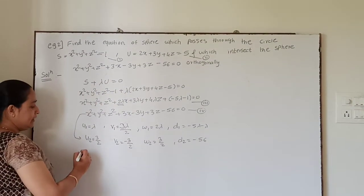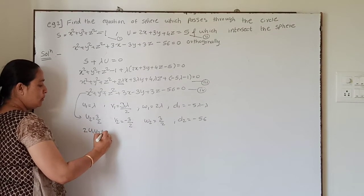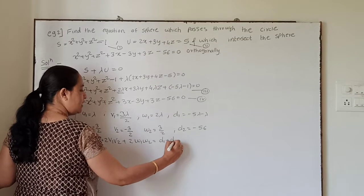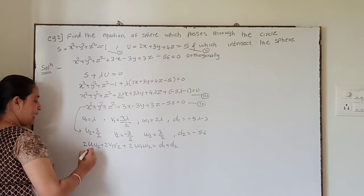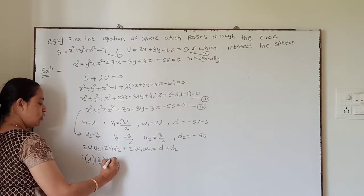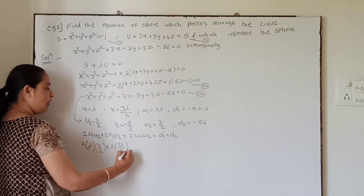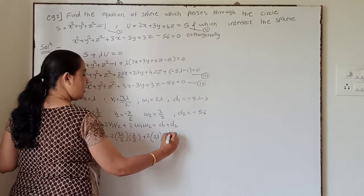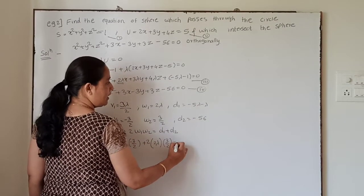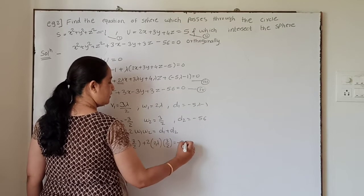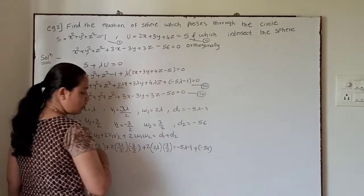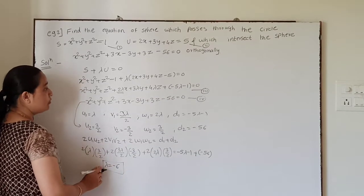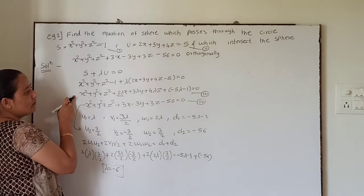We apply the condition for orthogonality of two spheres: 2u₁u₂ + 2v₁v₂ + 2w₁w₂ = d₁ + d₂. Substituting: 2(λ)(3/2) + 2(3λ/2)(−3/2) + 2(2λ)(3/2) = (−5λ − 1) + (−56). Solving this equation gives λ = −6.